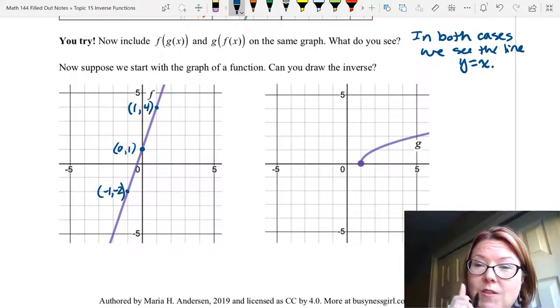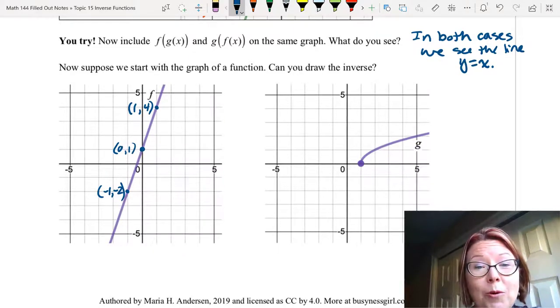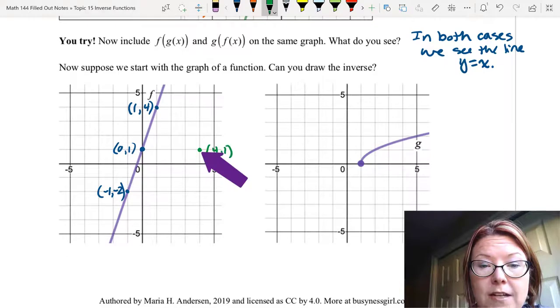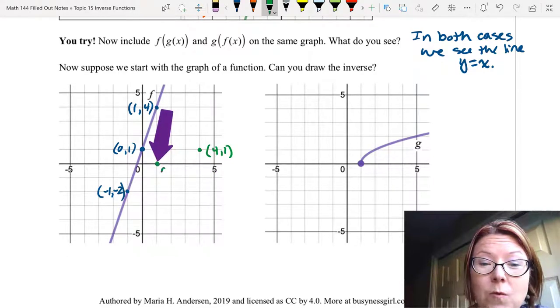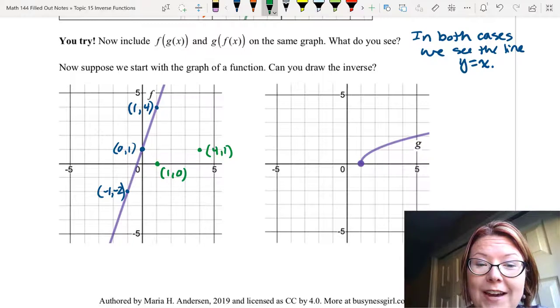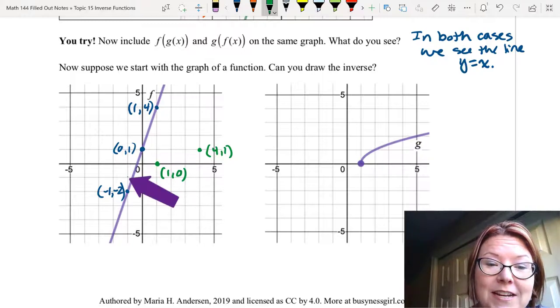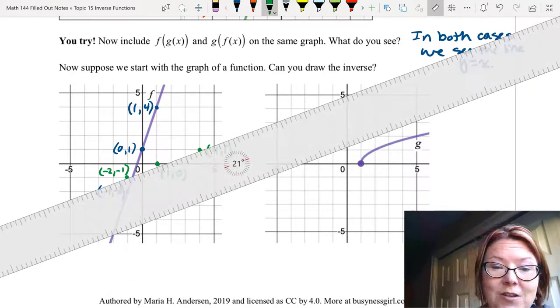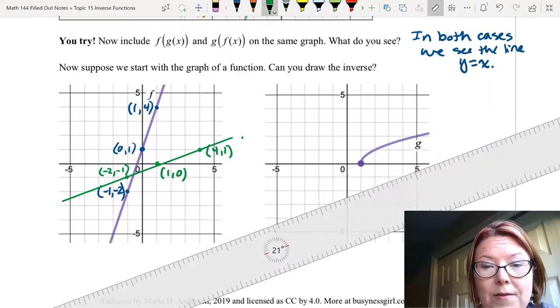So we know two things. One, we know this should be a perfect reflection over the line y = x. But even more importantly, we know that on the inverse, every point should have its x and y coordinates reversed. So where we had a point of (1, 4), let's put a point at (4, 1). And where we had a point at (0, 1), let's put a point at (1, 0). And where we had a point at (-1, -2), let's put a point at (-2, -1). This should make a straight line since the original graph was a straight line. So let's go ahead and draw that line. We'll call that one g.